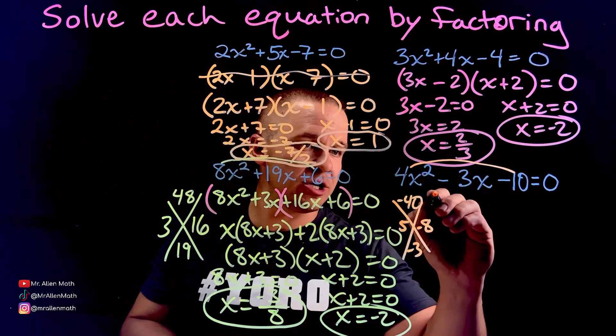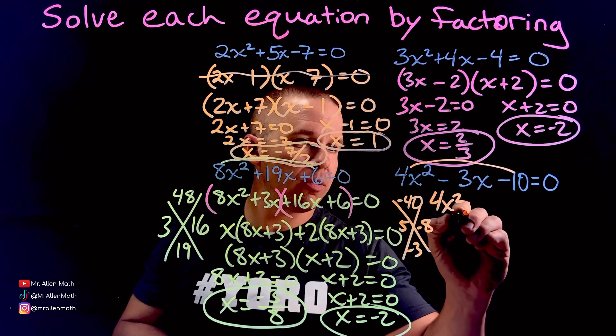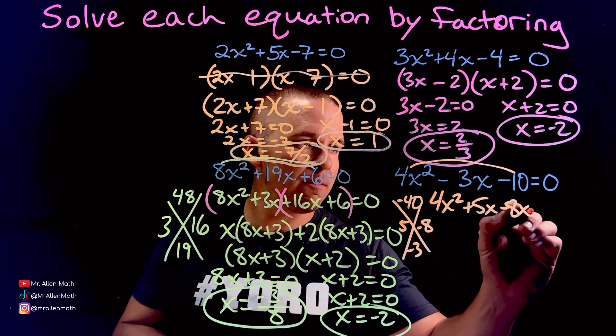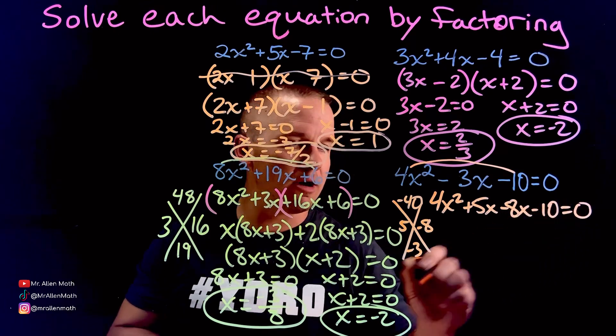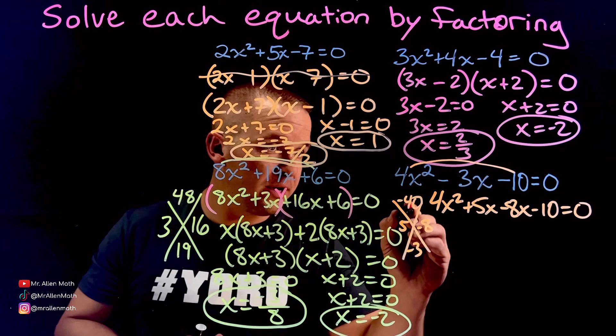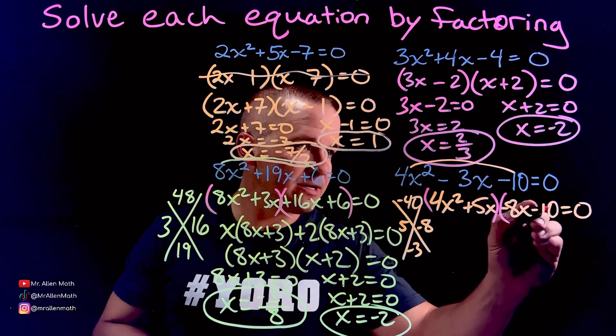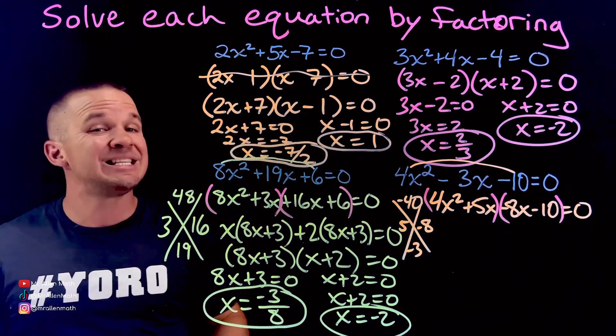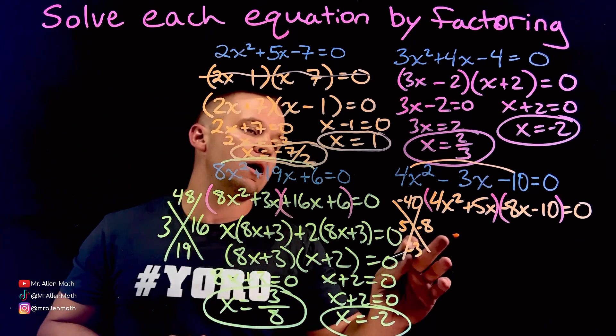The 4x squared does not change. So 4x squared plus 5x minus 8x minus 10 equals zero. I now have four terms. So I'm going to group these. First two, last two. Make sure you bring that negative sign in there. It is important, children.